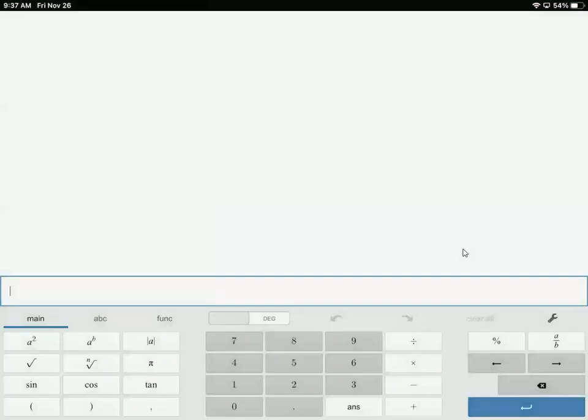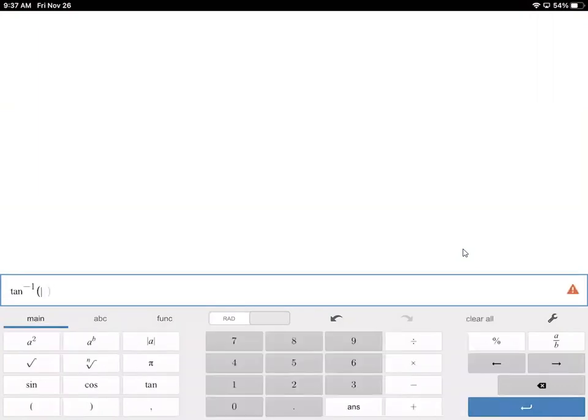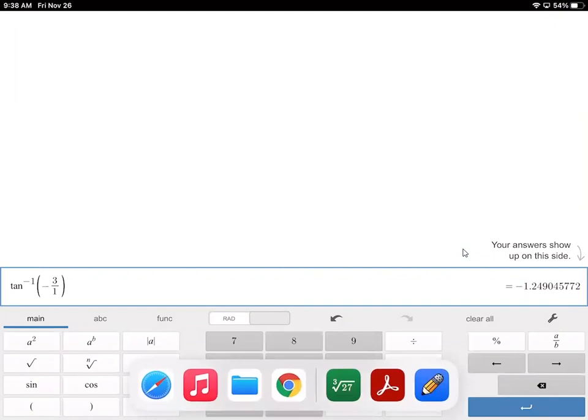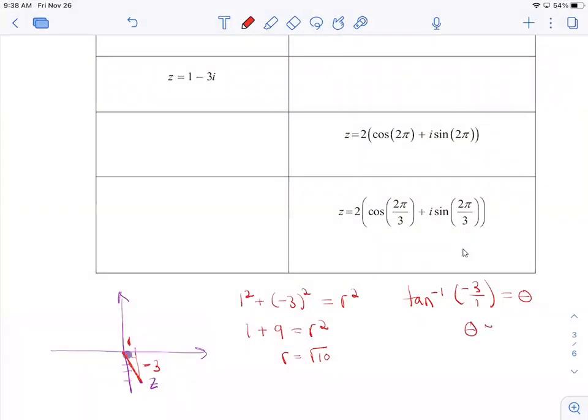So I'm going to go here. Now, because in this problem we want our theta to be between 0 and 2 pi, I'm going to make sure I'm in radians. But if the problem was in degrees, I'd make sure I'm in degrees. So I'm going to do inverse tangent of negative 3, and you can't do over 1, but you don't need to. So I get negative 1.25 is what I'm going to round to. Here's the deal. Based on the instructions and how I defined it, I need theta to be between 0 and 2 pi. So we've talked about this a lot and hopefully it's getting better.